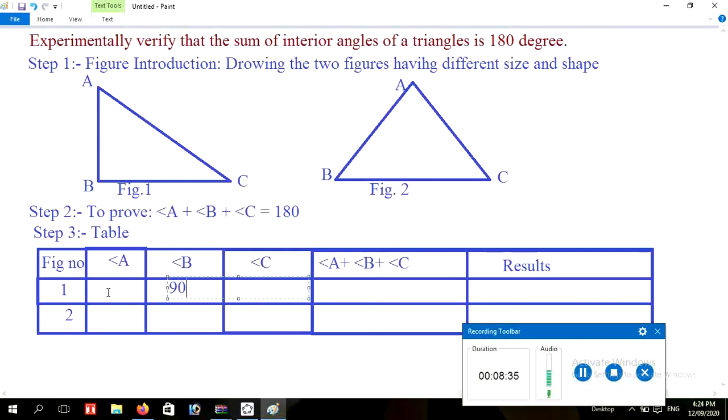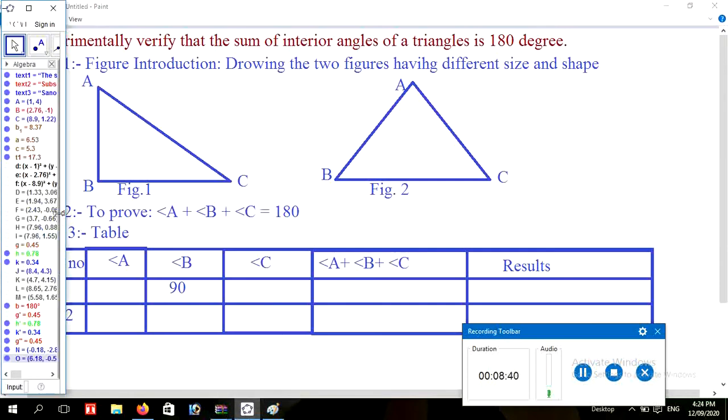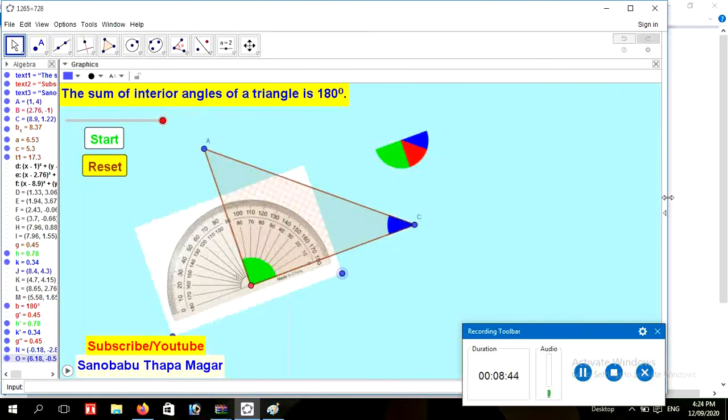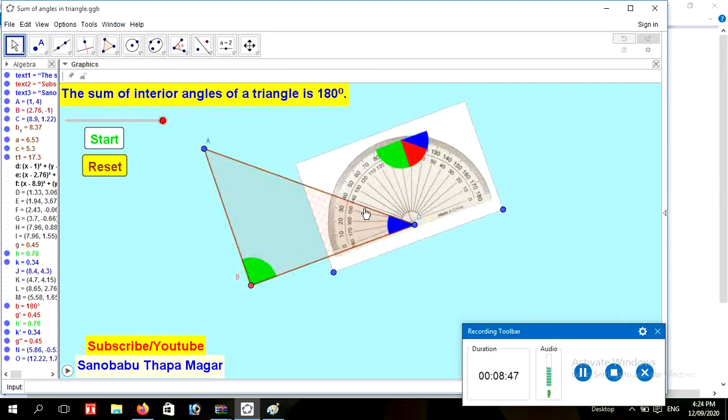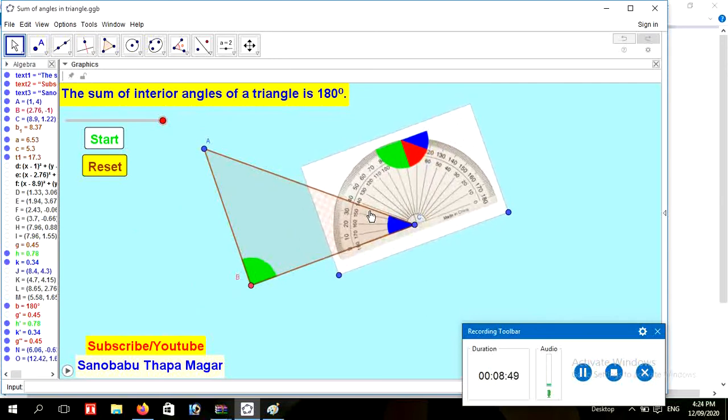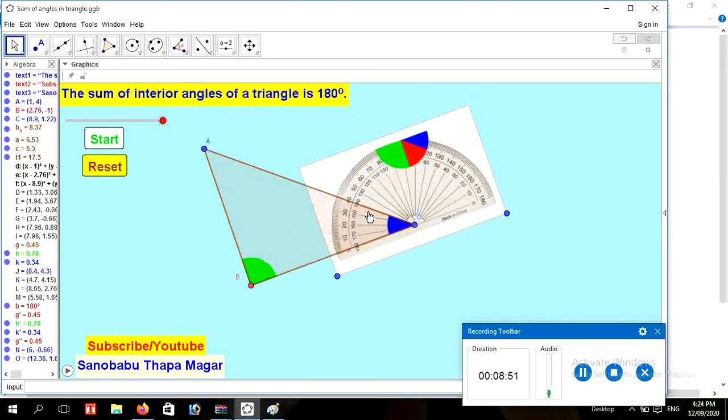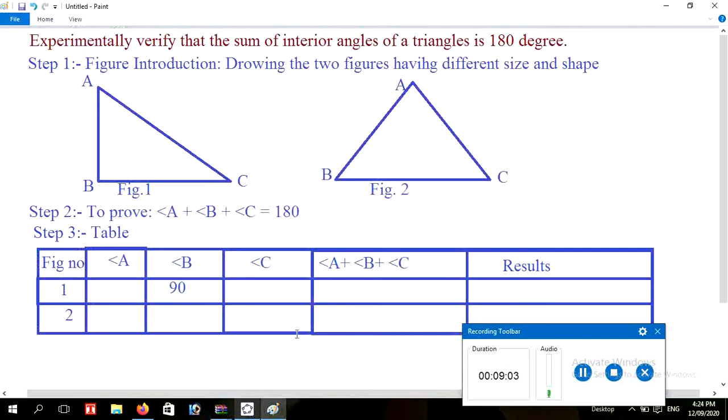And I am going to measure another angle also. Now I am going to measure angle C, and C represents 40 degrees. The measure of angle C is 40 degrees.